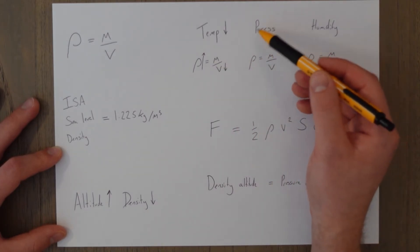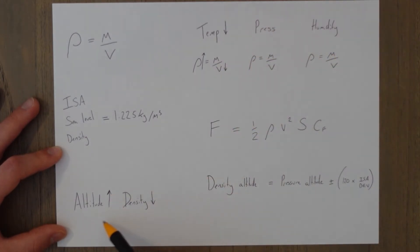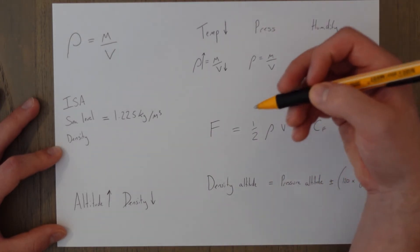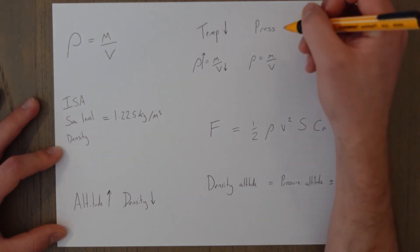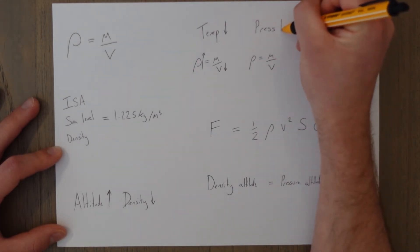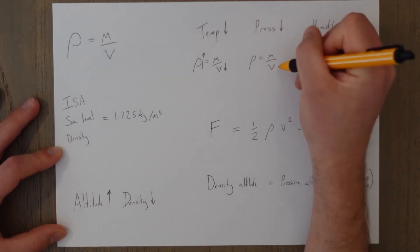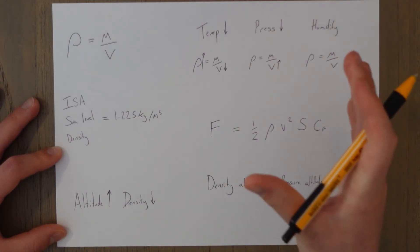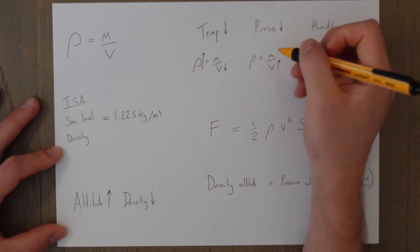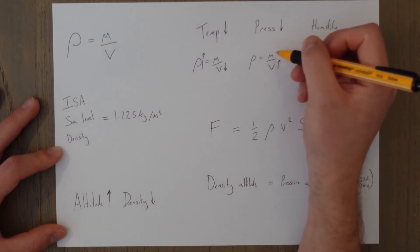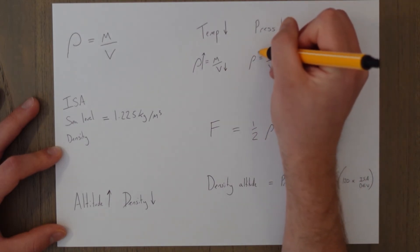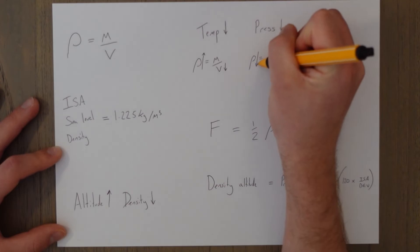The main driving factor behind the altitude–density relationship is pressure. As we increase in altitude, the pressure drops. This causes the volume of air to expand — everything expands out — which means there are fewer particles per unit volume, and that causes the density to drop.